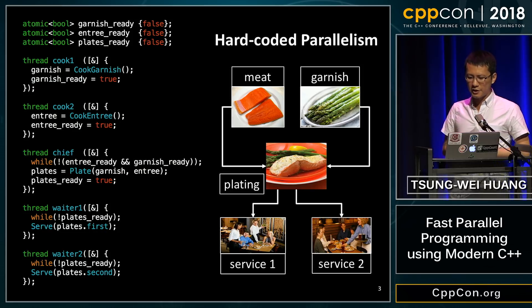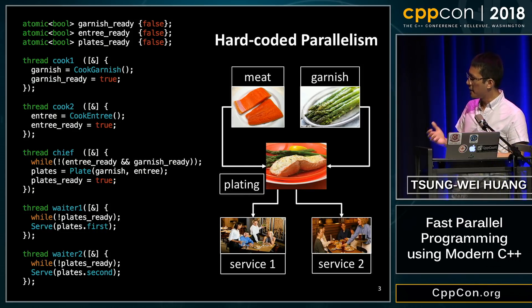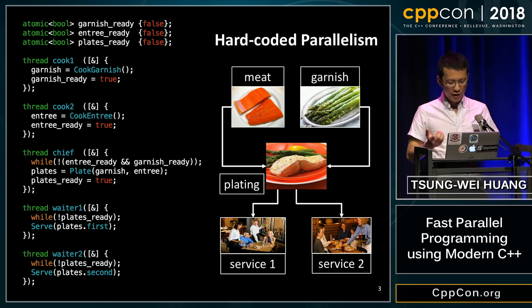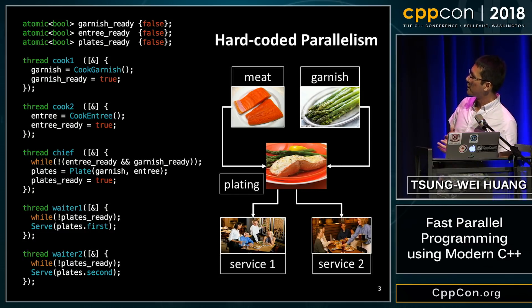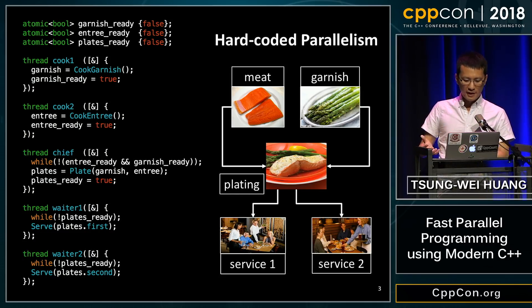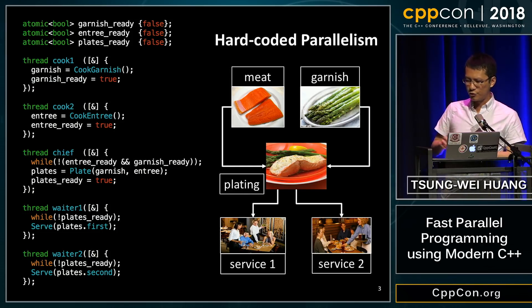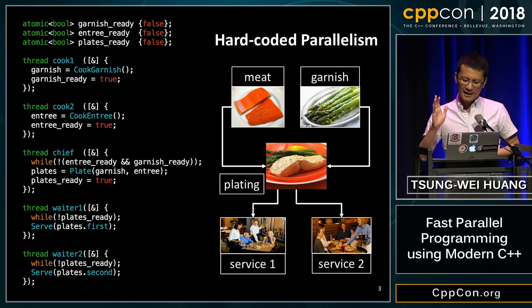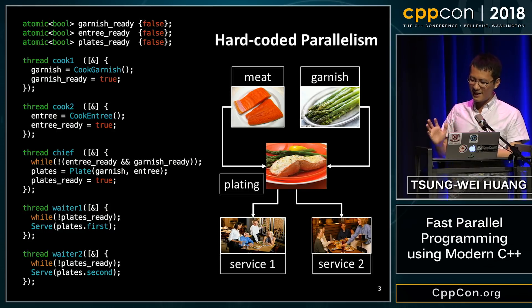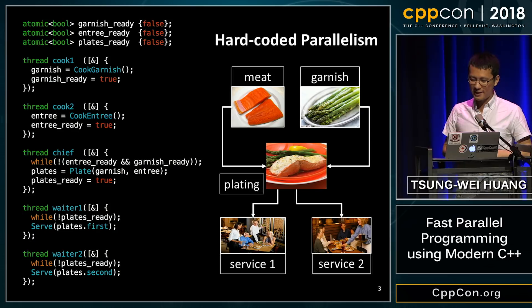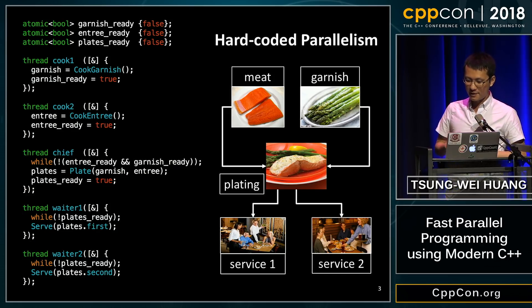For example, suppose we are running a kitchen brigade where we have two line cooks working on the meat and garnish, one chef working on the plate and putting together meat and garnish, and two waiters doing the service and delivering food to two hungry diners. We have five tasks plus four dependencies, and we cannot start plating until meat and garnish are finished. Similarly, we cannot serve food until plating finishes.